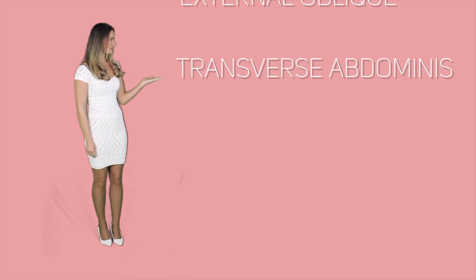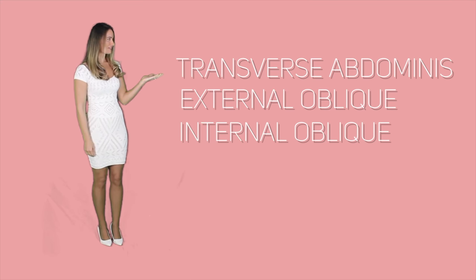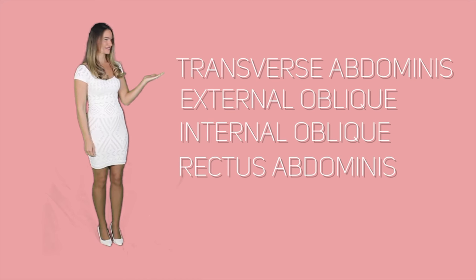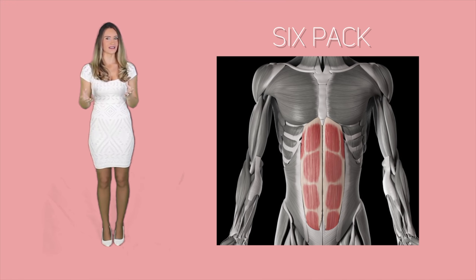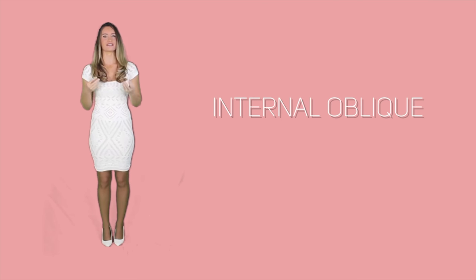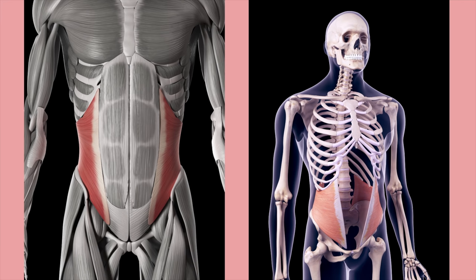The four abdominal muscles are the transverse abdominis, the external oblique, the internal oblique, and the rectus abdominis. The rectus abdominis is the most popular and forms the six-pack. The internal oblique is a flat and broad muscle occurring inferior to the external oblique, and it arises from the pelvic girdle all the way up to the ribs. The name oblique implies that it is slanting.